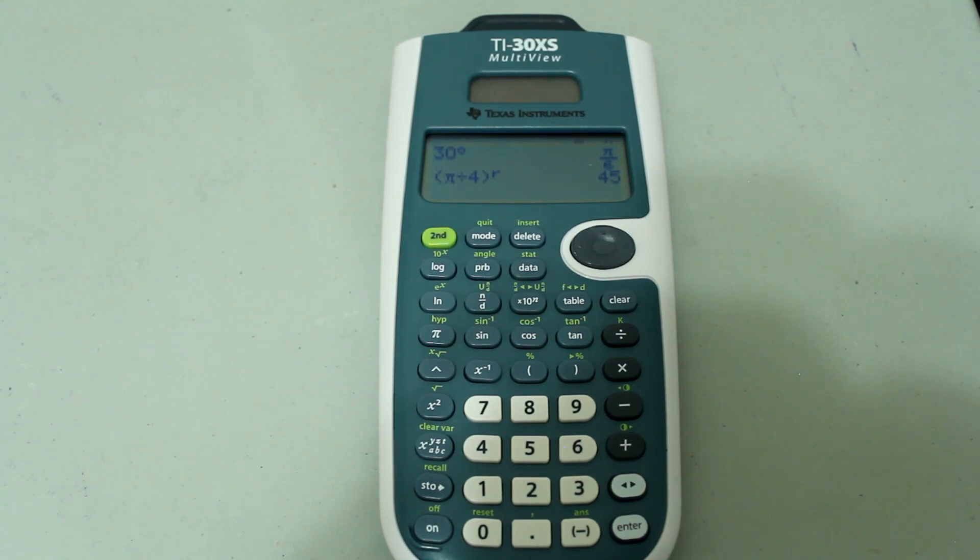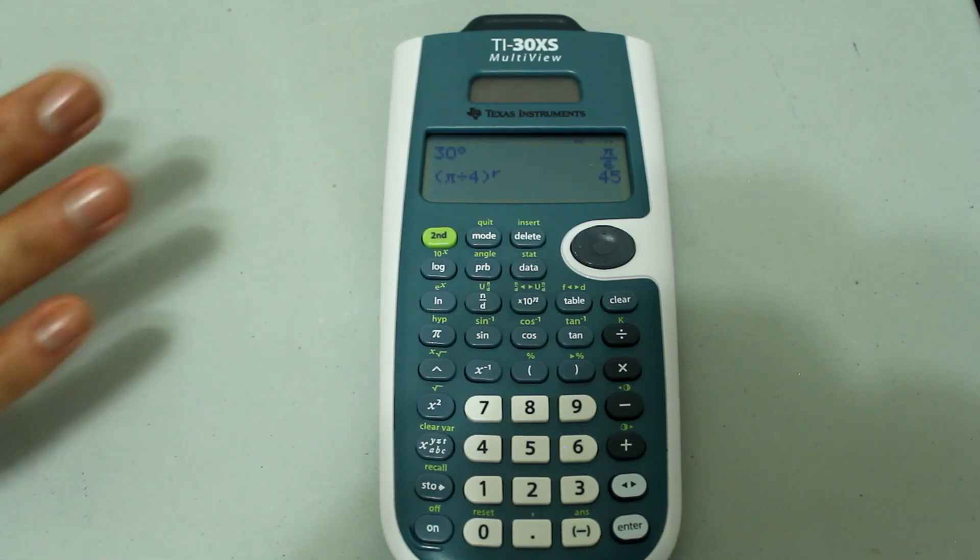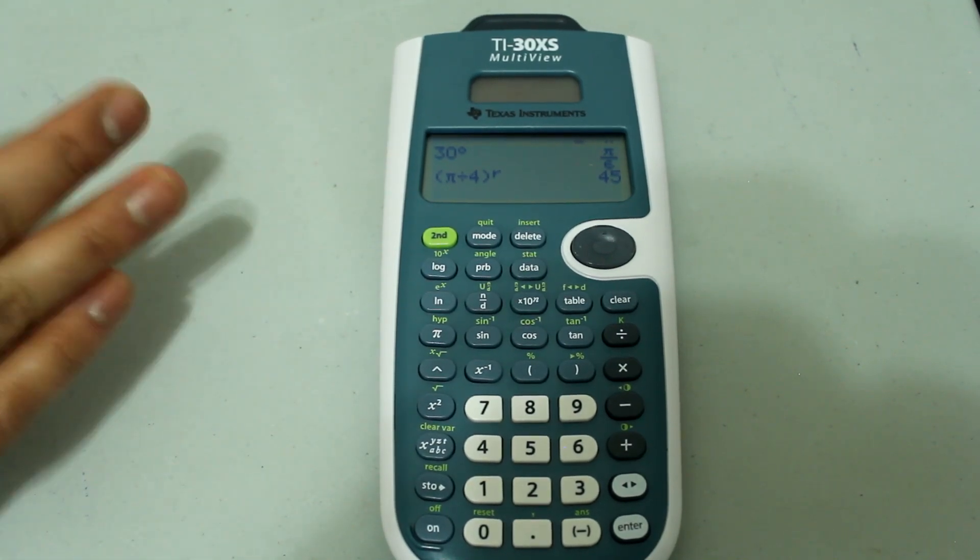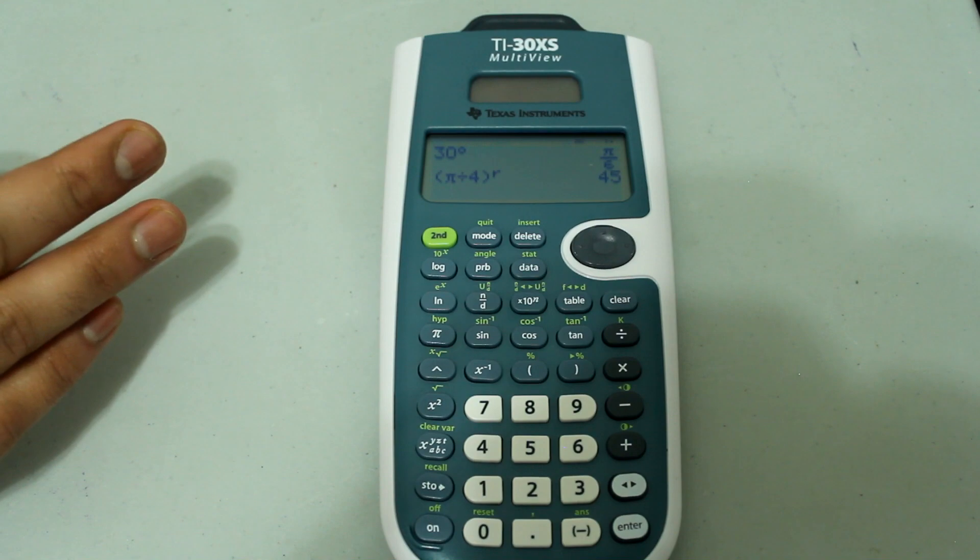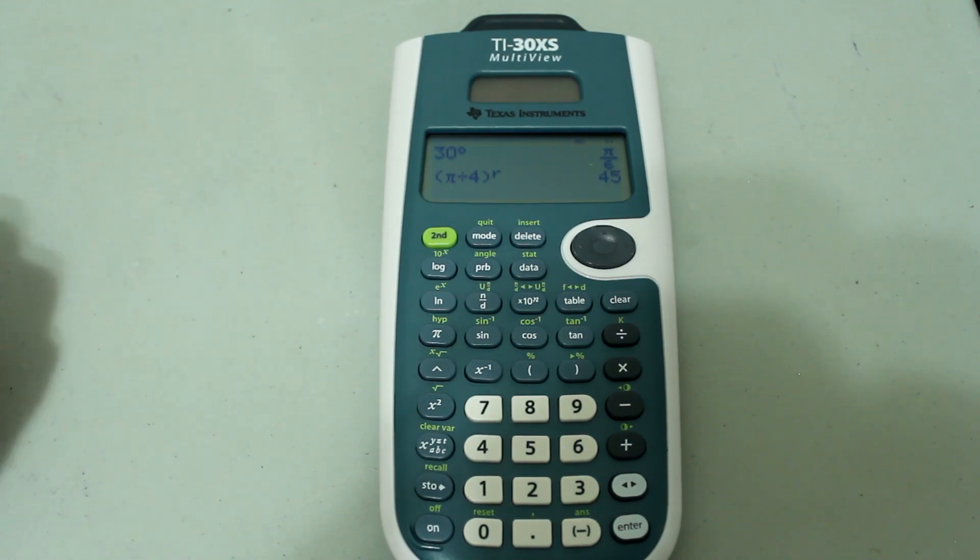So let's say most of your calculations are in degrees and you needed to do one quick calculation in radians or vice versa. So since we're in degree mode right now, we can do a calculation in radians.